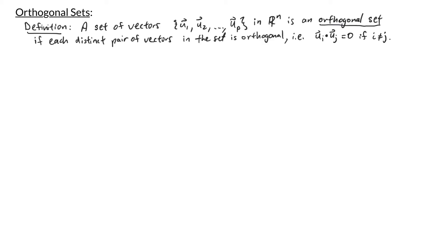In this video we'll look at orthogonal sets. We'll define what an orthogonal set is and look at some theorems associated with them. We say that a set of vectors u1 through up in R^n is an orthogonal set if each distinct pair of vectors in the set is orthogonal. That means ui dot uj is equal to zero whenever i is not equal to j.